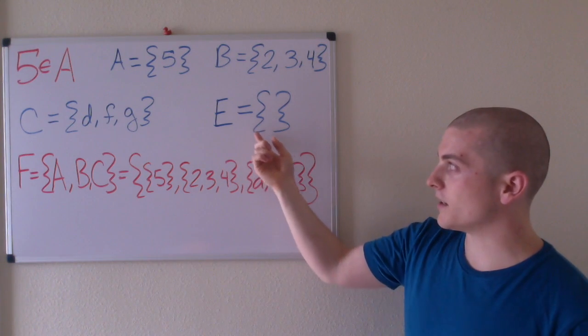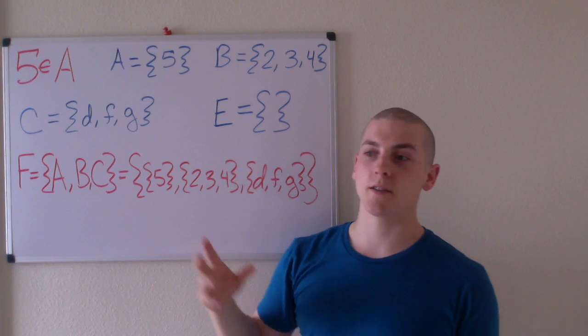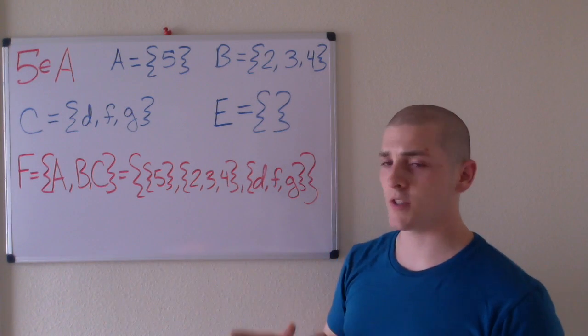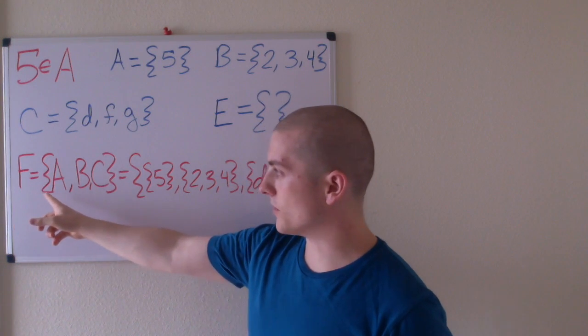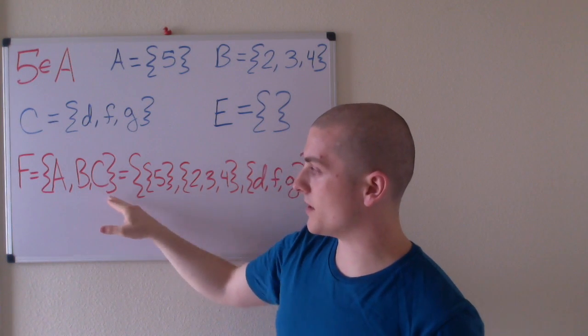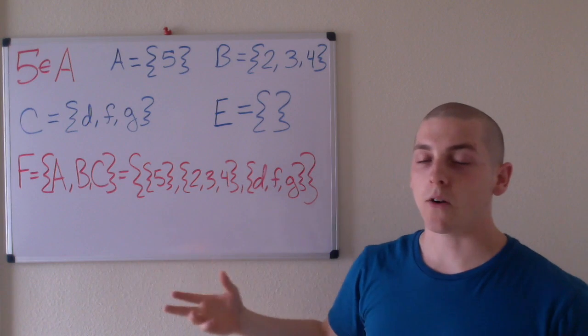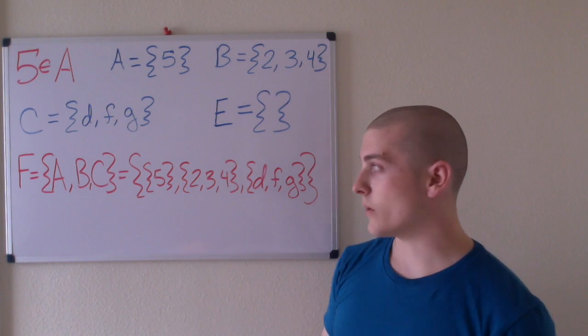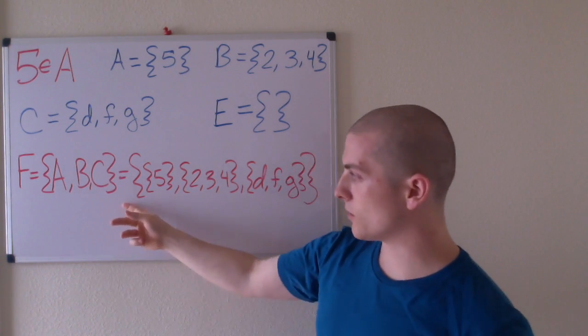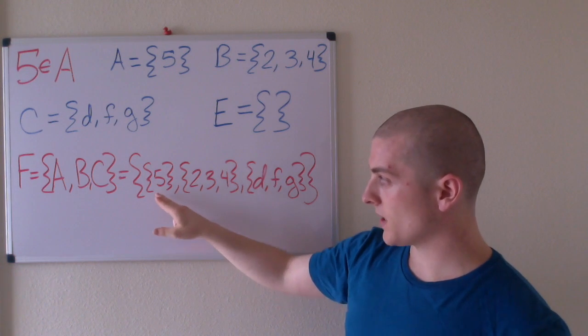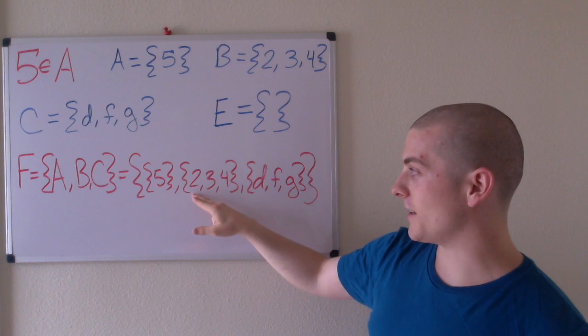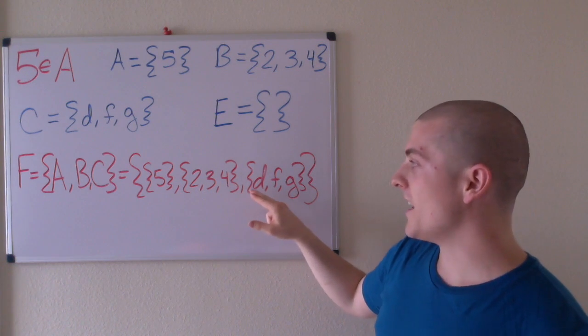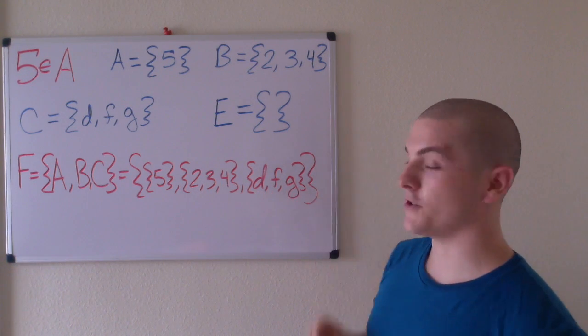The set E contains no elements in this case, which has an impact that you'll see in future videos. And finally, the set F equals the set containing elements A, B, and C. In this case, our elements are sets, so we would read this as F equals the set containing the element 5, the set containing elements 2, 3, and 4, and the set containing D, F, and G.